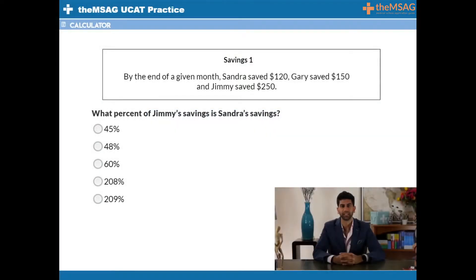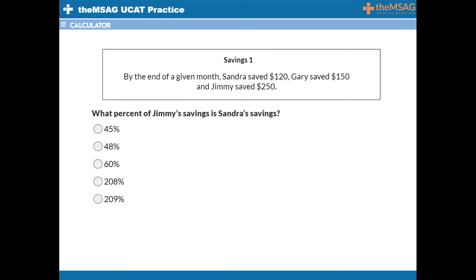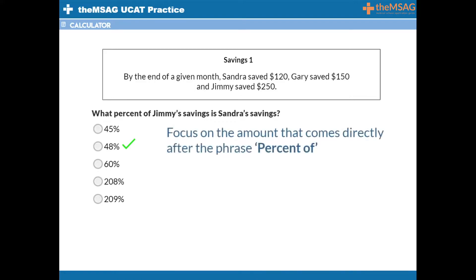Question 1. By the end of a given month, Sandra saved $120, Gary saved $150, and Jimmy saved $250. What percent of Jimmy's savings is Sandra's savings? The answer is B, 48%.